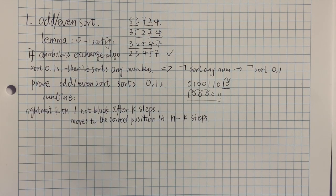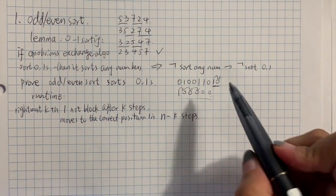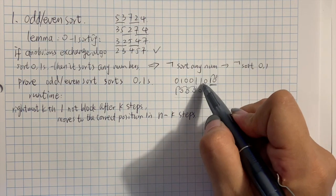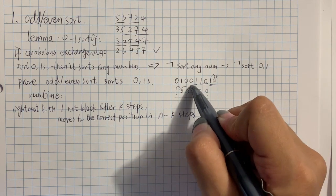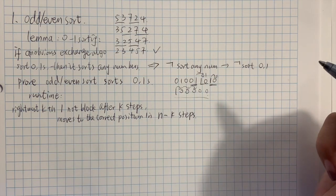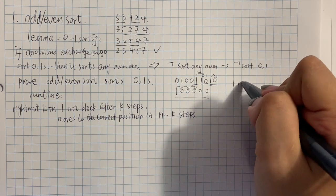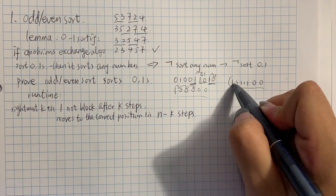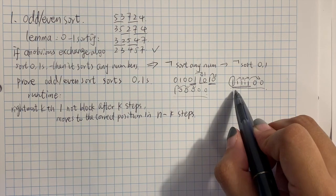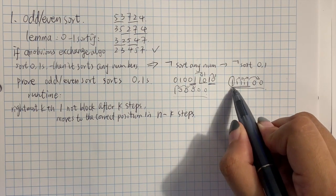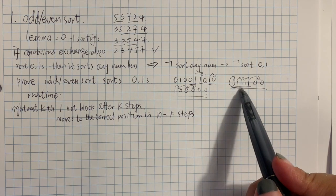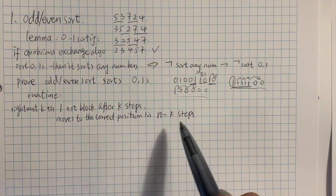And how about the runtime? The runtime observation is the following: the rightmost k-th one — for example, in this case, this one is considered to be the third rightmost one — will not be blocked after k steps. In the next iteration, after this zero and one swap, it compares itself with this zero and gets moved to the right. What blocked means is when you have a bunch of ones followed by a zero; then this one will be blocked since all of this is one, so you need to wait until the ones on its right move. The k-th rightmost one will not move after k steps.